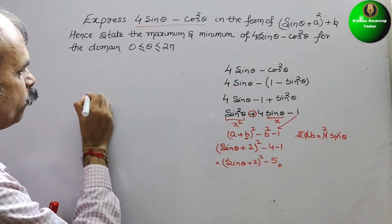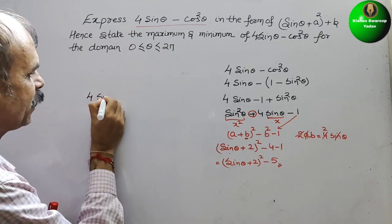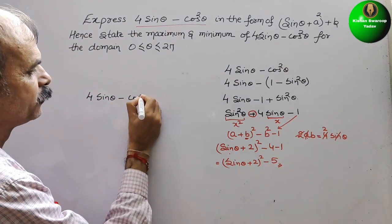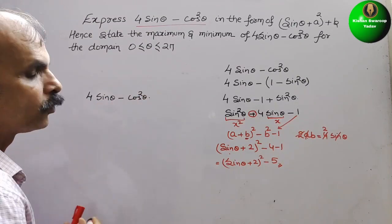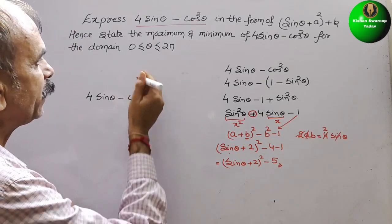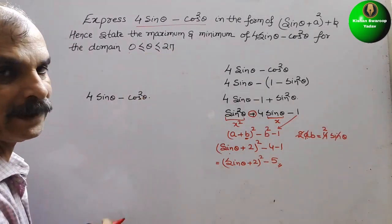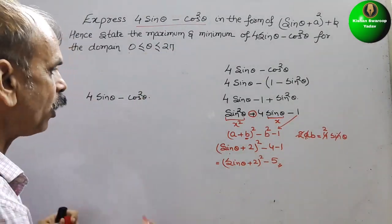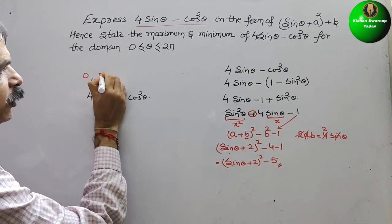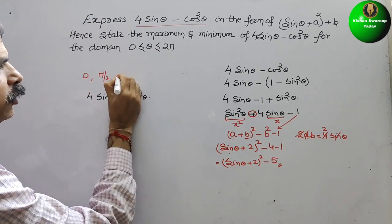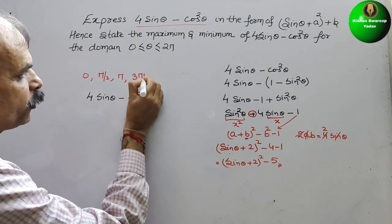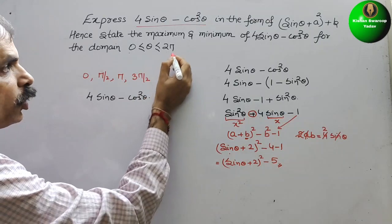They have given 4 sin theta minus cos square theta, and here they have given the domain. The domain is 0 to 2 pi, that means 360 degrees. So we will take the key angles: 0, pi by 2, pi, 3 pi by 2, and 2 pi.